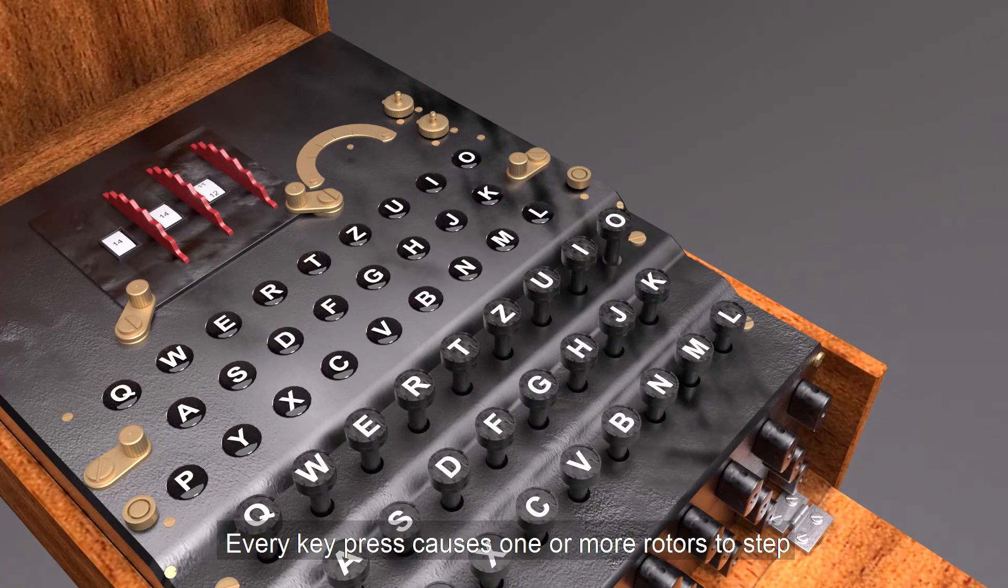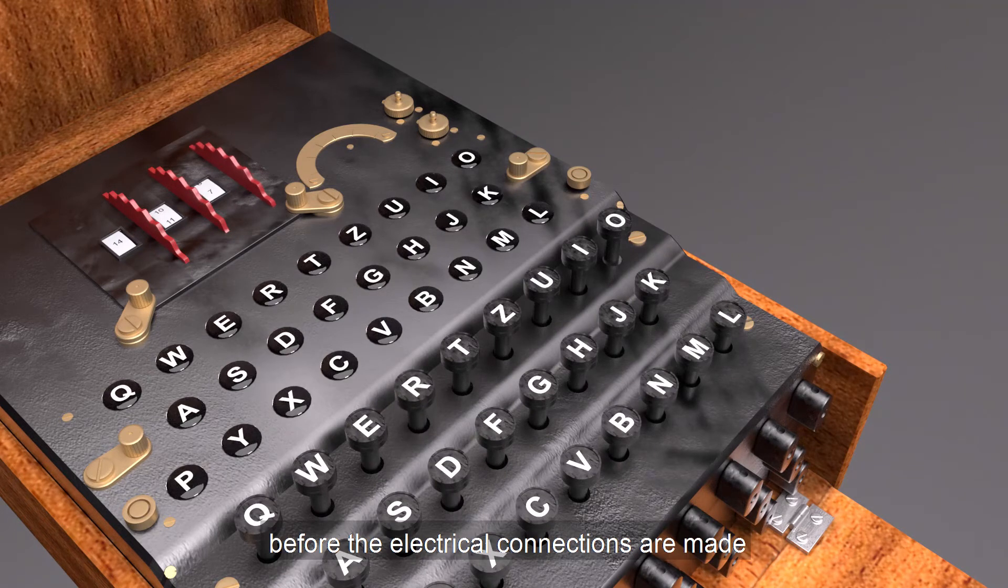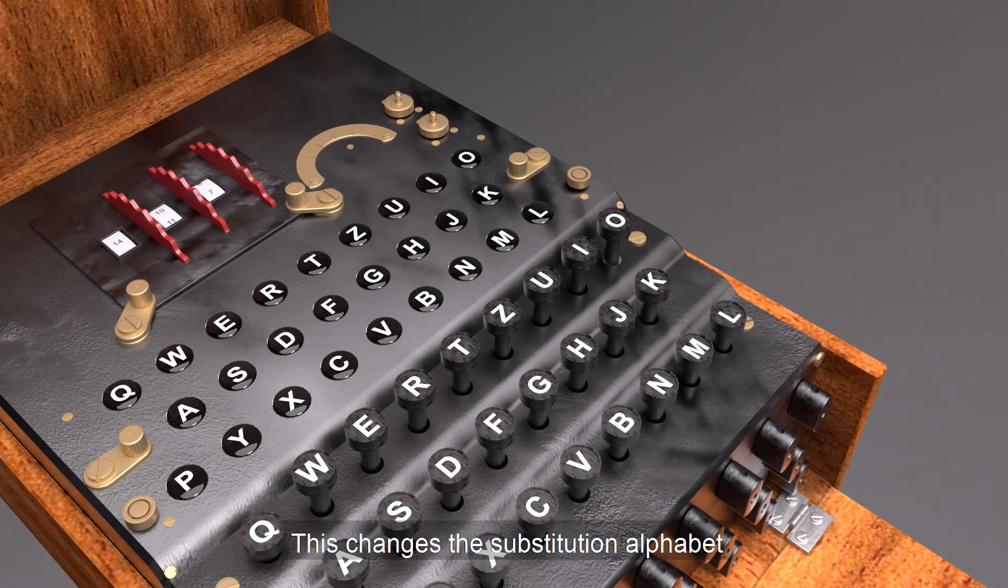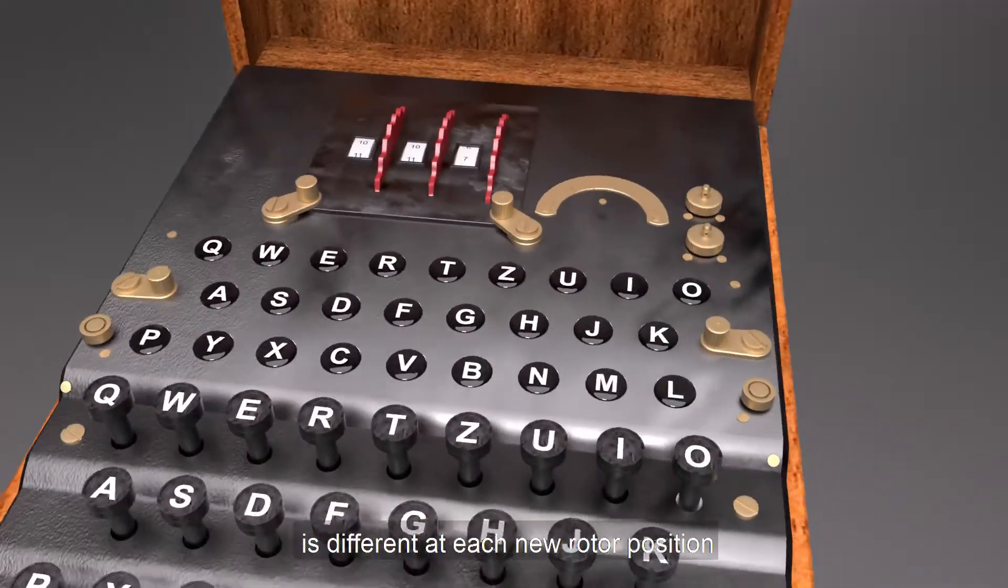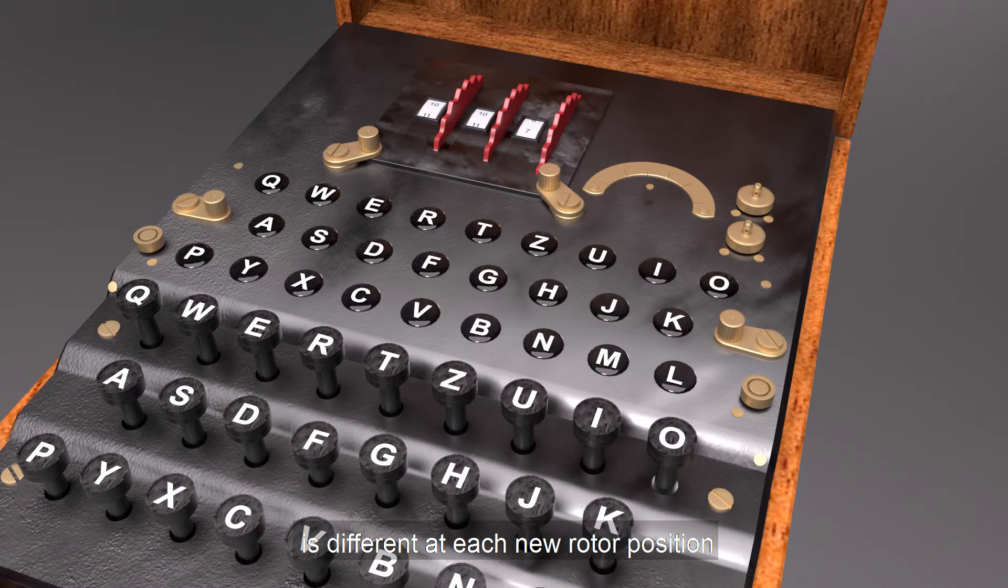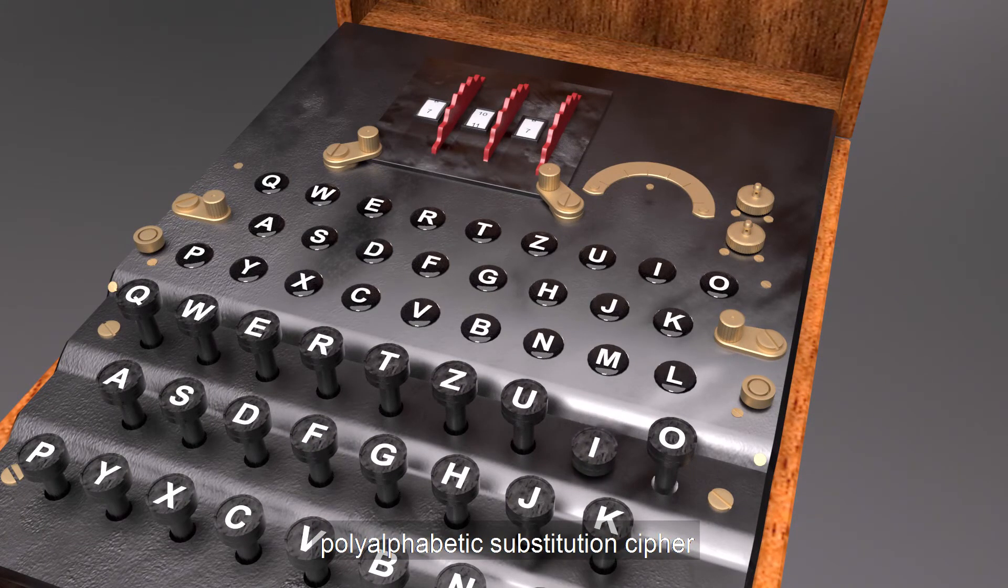Every key press causes one or more rotors to step before the electrical connections are made. This changes the substitution alphabet used for encryption and ensures that the cryptographic substitution is different at each new rotor position. This mechanism creates a more formidable polyalphabetic substitution cipher.